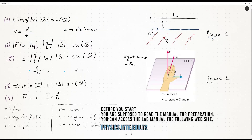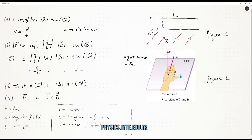In this experiment, we are going to study magnetic force on a current-carrying wire. Magnetic field exerts force on electrons in a conductor. Since electrons have nowhere to escape, the force is transmitted to the wire.